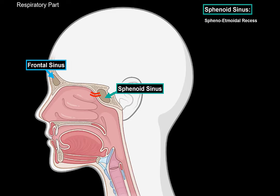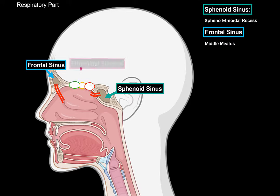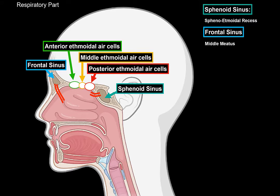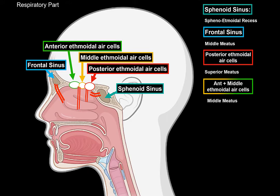In the front, we have the frontal sinus, which opens into the middle meatus. Then in between the sphenoid and the frontal bone, there's the ethmoidal sinus. The ethmoidal bone is a little different in that this sinus has numerous walls within the sinus, making air compartments called the ethmoidal air cells. The ethmoidal air cells are numerous thin-walled cavities, and they're generally divided into the anterior ethmoidal air cells, middle ethmoidal air cells, and the posterior ethmoidal air cells. The posterior ethmoidal air cells open into the superior meatus, while the anterior and middle ethmoidal air cells open into the middle meatus.